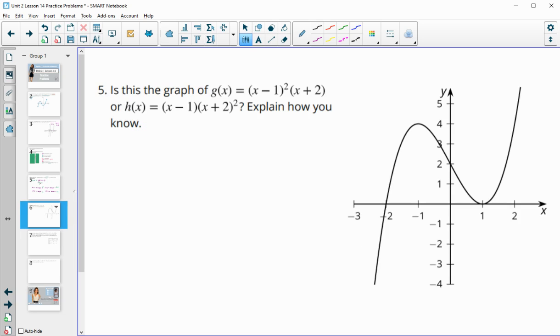Number five: Is this the graph of g(x) = (x-1)^2(x+2) or h(x) = (x-1)(x+2)^2? g(x) has (x-1) squared and then (x+2). h(x) has (x-1) and then (x+2) squared.